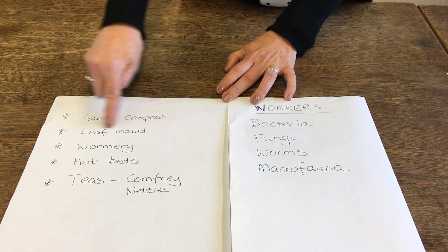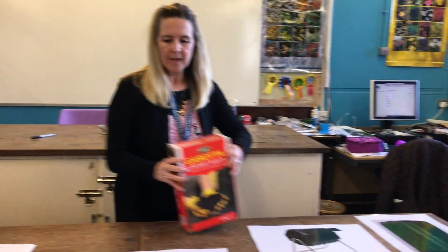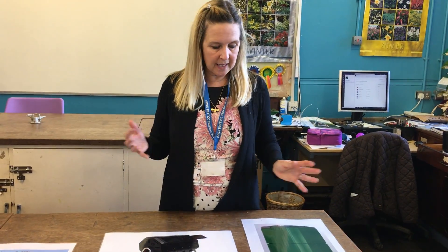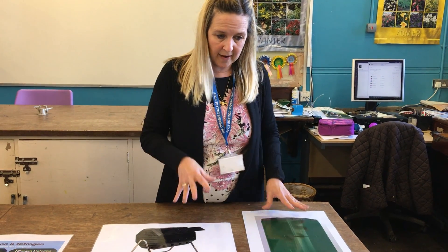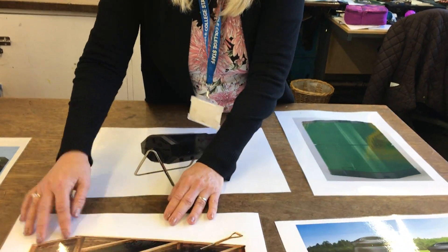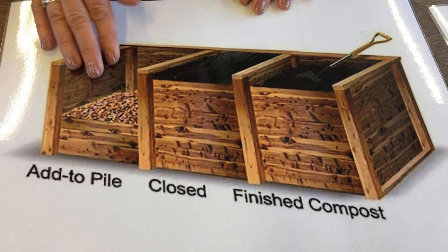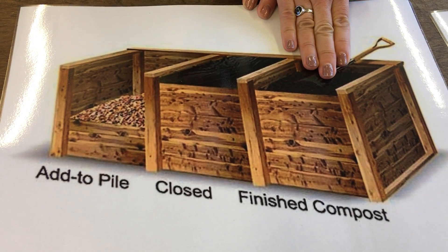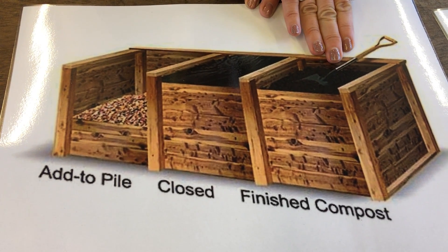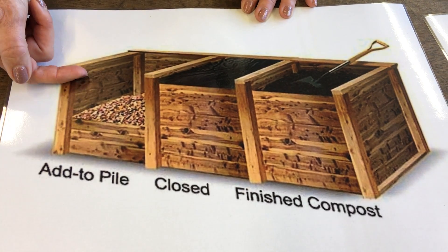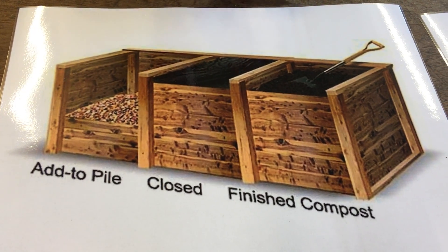Let's focus on garden composting. First of all, what equipment do we need? We need some kind of container — as gardeners, we're just trying to speed up the process. Here's a bay system, and it's good to have three bays because you can fill one, leave one, and use one. You can also move the compost from one bay to another really easily, and often they have front surfaces that you can dismantle.